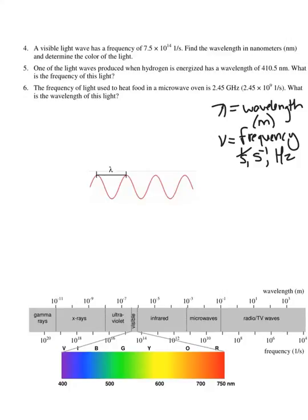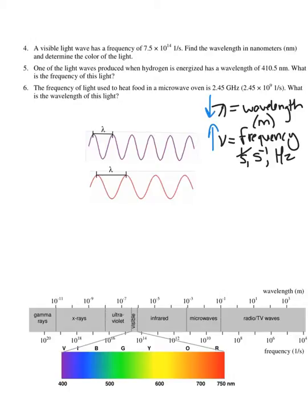Let's think about how wavelength and frequency relate to each other. If I were to shorten the wavelength of a given wave, then I would be able to fit more waves in a given space, or more waves per second if they're traveling in space. So essentially, the shorter the wavelength, the higher the frequency, and vice versa. So wavelength and frequency are going to be inversely related.